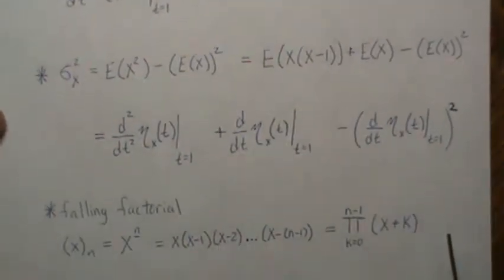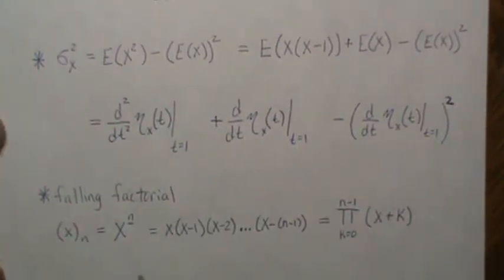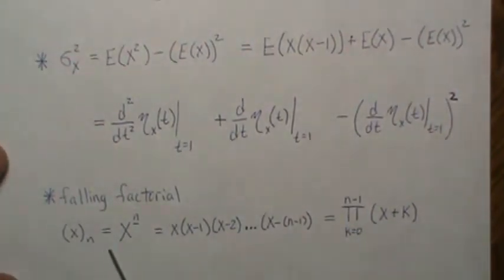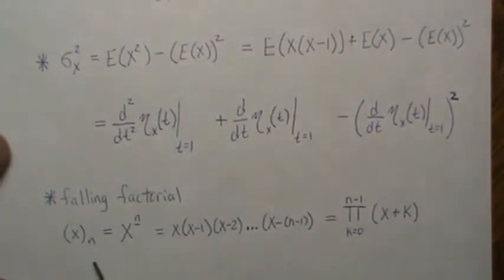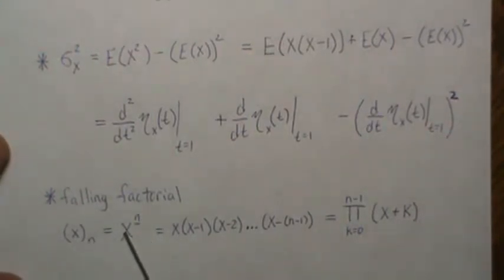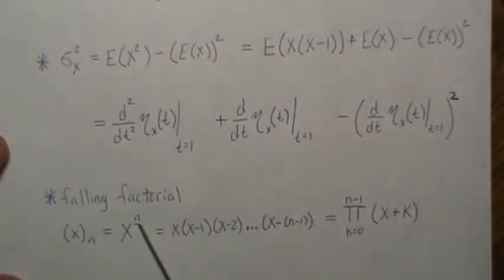I think I have another video where I talk about falling factorials or rising factorials — it's the same thing. There's no standard notation. Sometimes it's written like this, sometimes with x to the n with a bar under it, meaning a falling factorial. Rising factorial has the bar on top.